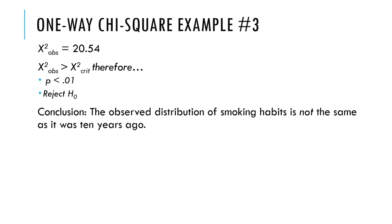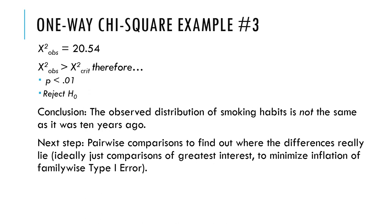I calculated the p-value, it's 0.014. The chi-square observed, 20.54, is greater than critical. Therefore, our p is less than alpha. We reject the null hypothesis and we can say that the observed distribution now in our sample of smoking habits is not the same as that distribution that formed our null hypothesis distribution from 10 years ago. The next step would be to do pair-wise comparisons to find out where the differences really lie. So we would do proportions tests, two groups at a time, to figure out which differences in the sample we think are reflecting differences in the population. I hope this has helped you understand what the goodness of fit test is like.